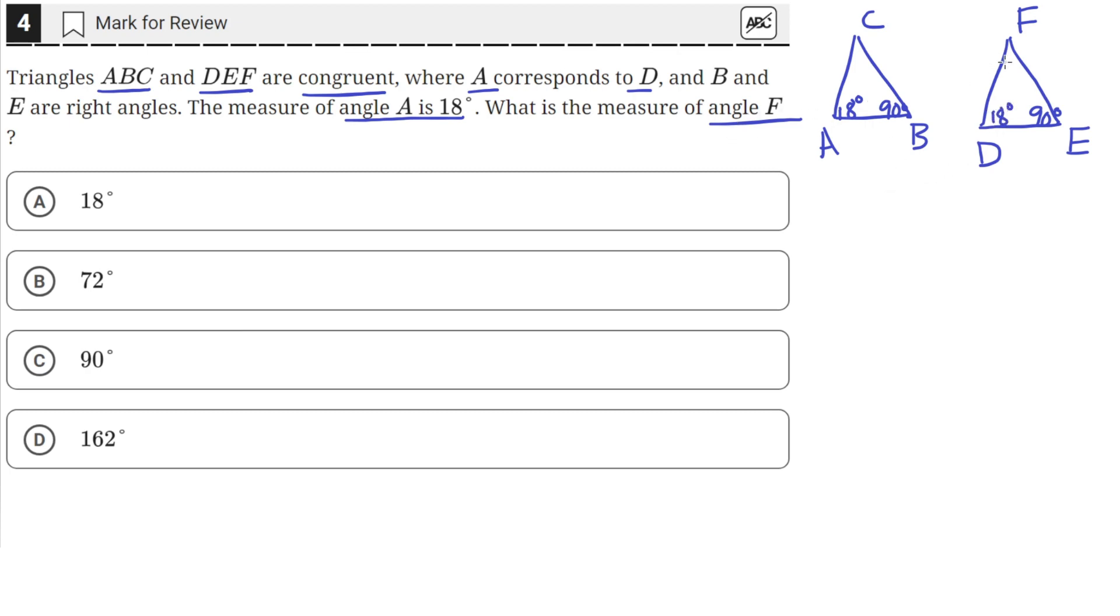To find angle F, we need to remember that all angles in a triangle add up to 180 degrees. If we do 180 minus 18 minus 90, we'll get the value of angle F, because this angle needs to be such that when added with 18 and 90, it equals 180. So 180 minus 18 minus 90 gives us an answer of 72 degrees.